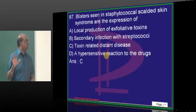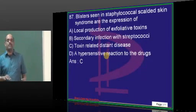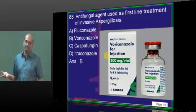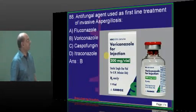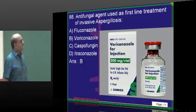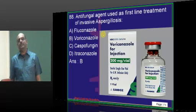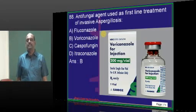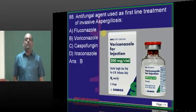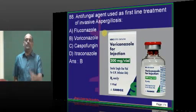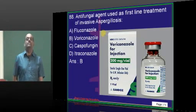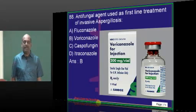Blisters — why do they produce? Due to the toxin which is being produced. Which antifungal do you use for invasive aspergillosis?